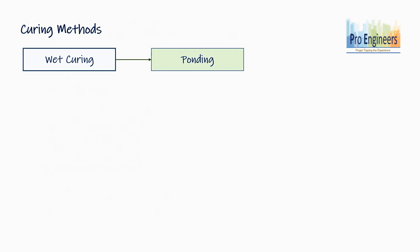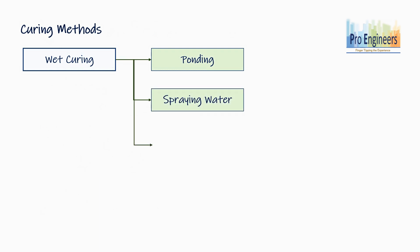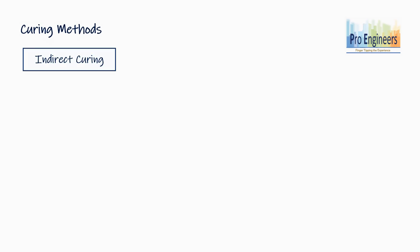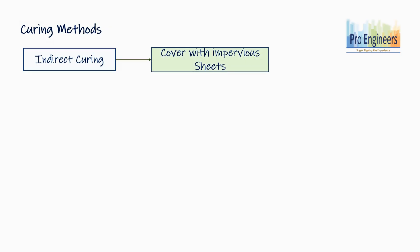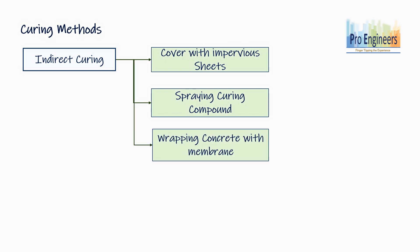Broadly speaking, curing methods are divided into two types. The first is wet curing, which is very common. In this method, the concrete surface is continuously kept in contact with water by way of ponding, spraying water, or wrapping the concrete surface with wet hessian cloth. The other method, which can be called indirect curing, involves prevention of evaporation loss by covering concrete with impervious paper, plastic sheet, or spraying a curing compound or membrane on the concrete surface.